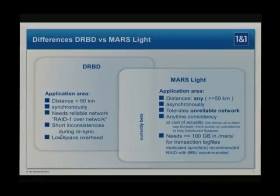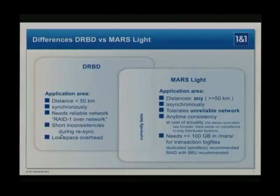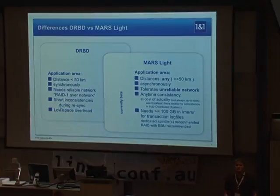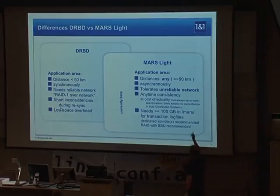You can use it on an independent level, because it may take some time until the mirror gets updated. But you always have consistent images — they may only be outdated, because the log file applying at the secondary side is asynchronous. There's only active-passive now, but MARS full may support active-active as a feature. But then it will not run over large distances. I concentrate on functionality that just cannot be done with DRBD — that's my first objective.